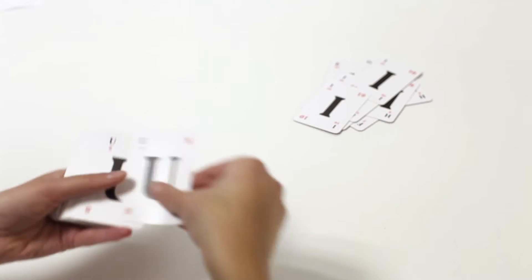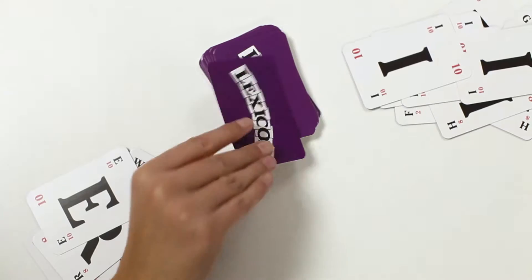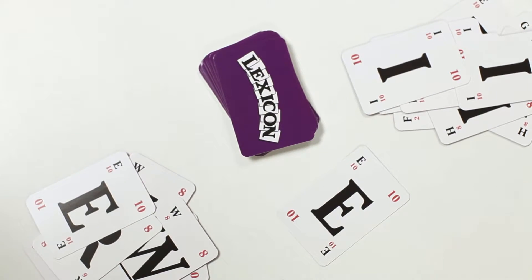Each player is dealt ten cards. The remaining cards stay face down in a pile. The first card is taken and placed face up to the left of the pile.